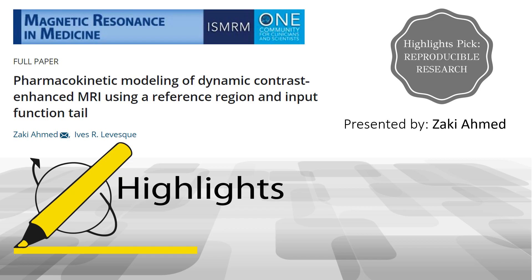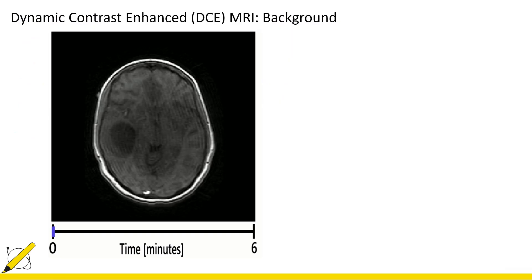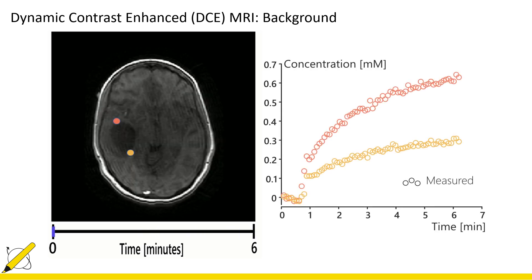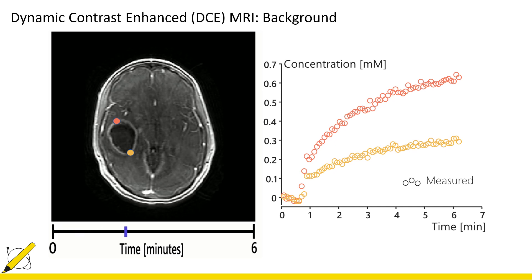DCE MRI involves a series of images with a tracer. The end result looks like a movie showing the arrival and uptake of the tracer. The tracer concentration varies as a function of time, and we can get quantitative estimates by fitting a model to the data and looking at the fitted parameters.